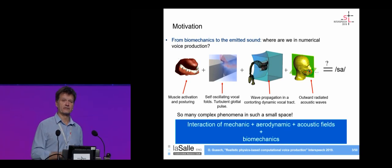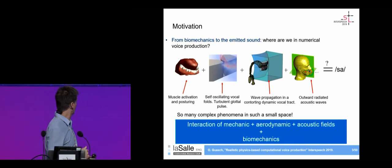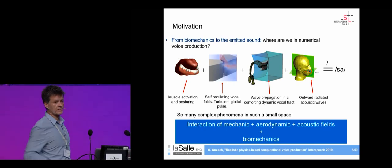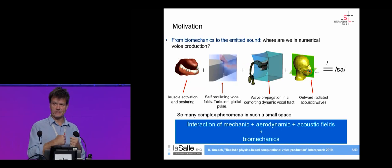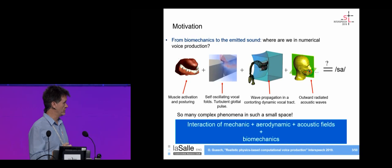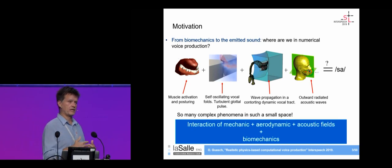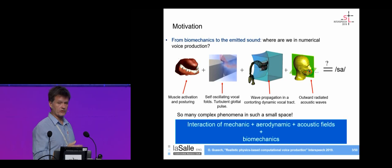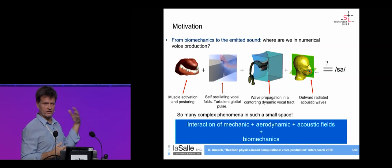From a physical point of view, the functioning of the voice organ is rather complex. In this very small space of 17 centimeters, we have many things going on: the interaction of biomechanics with muscle activation and posturing, the interaction of airflow from the lungs with the vocal folds inducing self-oscillation and generating a pulsating glottal jet, sound propagation in the complex-shaped vocal tract, and finally the radiated sound others can hear.